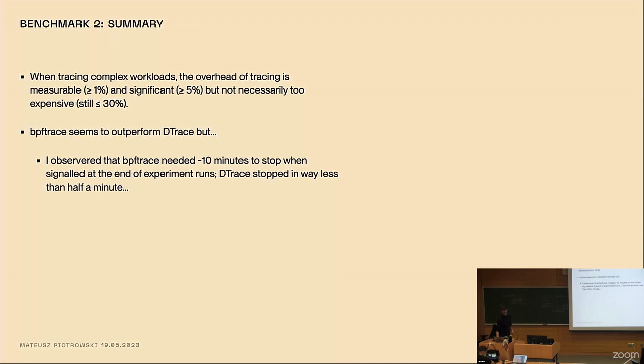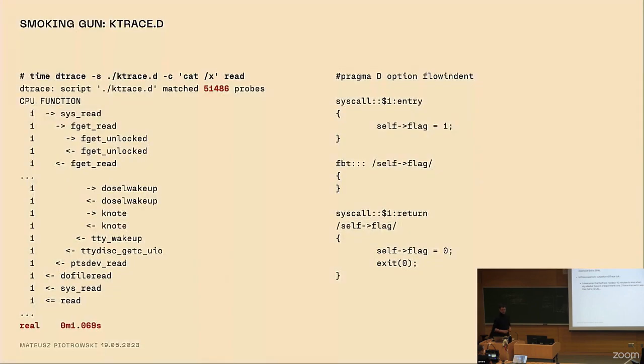So when tracing complex workloads, the overhead of tracing is measurable, over 1% definitely, and significant, over 5%, but not necessarily too expensive. So that's good news. BPF trace seems to outperform DTrace, but I observed that sometimes BPF trace takes a lot to actually quit, and that was surprising.